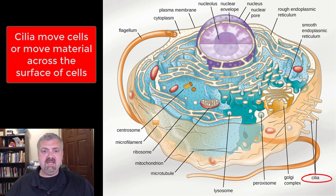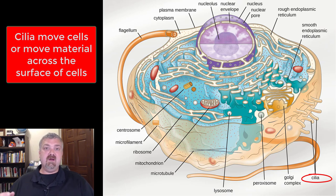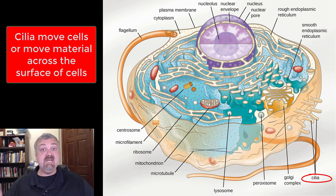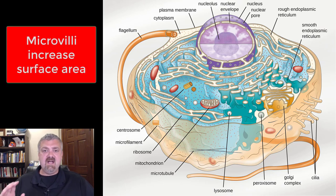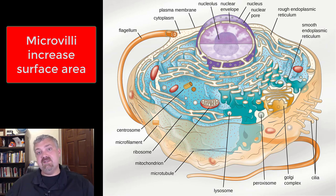Next, we have cilia. Cilia appear on the surface of some cells — and notably, bacteria don't have cilia, so any microorganism with cilia must be a eukaryote. Cilia are used for movement: in single-celled organisms they propel the cell, while in human cells they move material across the cell's surface. A related structure not shown here is the microvilli — shorter, more numerous projections whose function is to increase surface area for cells that absorb or secrete large amounts of material.